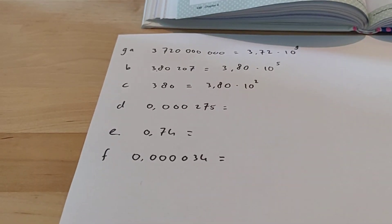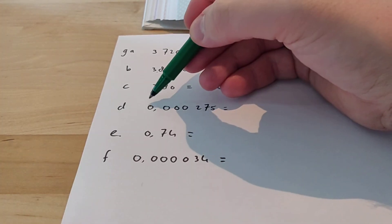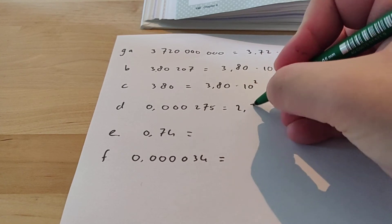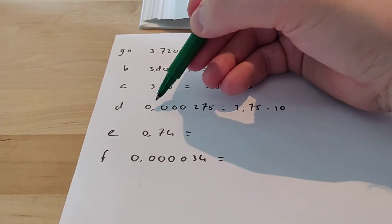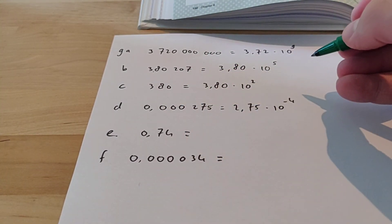Moving on to the small numbers. So now the power is going to be negative. The first digit that is not 0 that we encounter is a 2. So I'm going to write down 2.75 times 10 to the power, and then we count 1, 2, 3, 4 places. So it becomes minus 4.